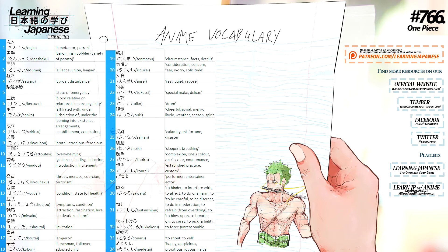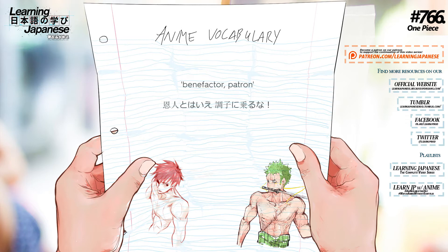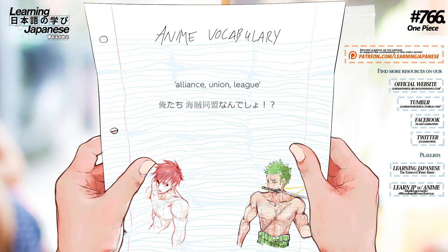Onjin — Benefactor. Patron. Danseku — Baron. Irish Cobbler. Doumei — Alliance. Union. League.